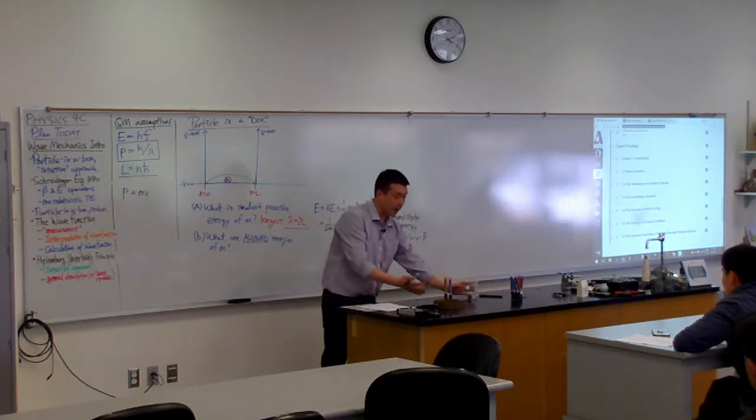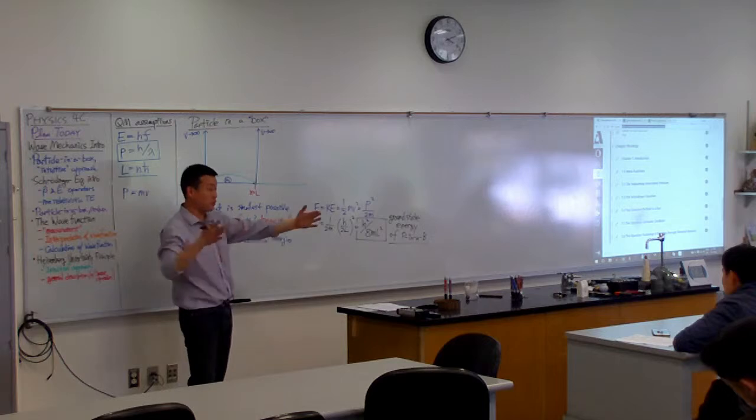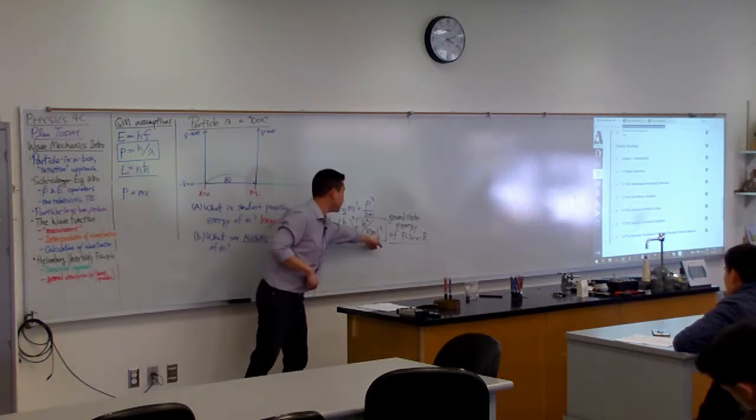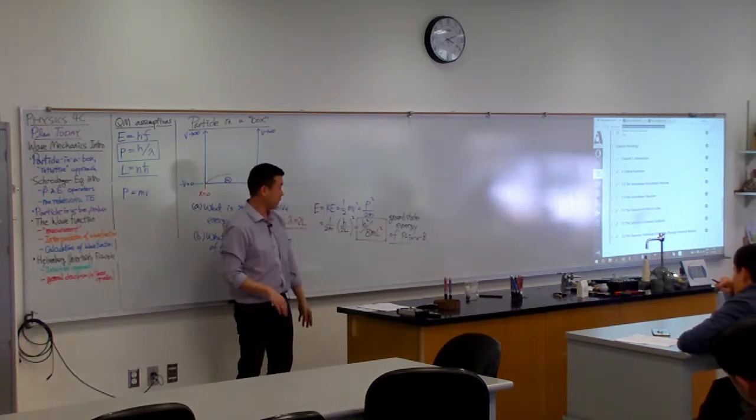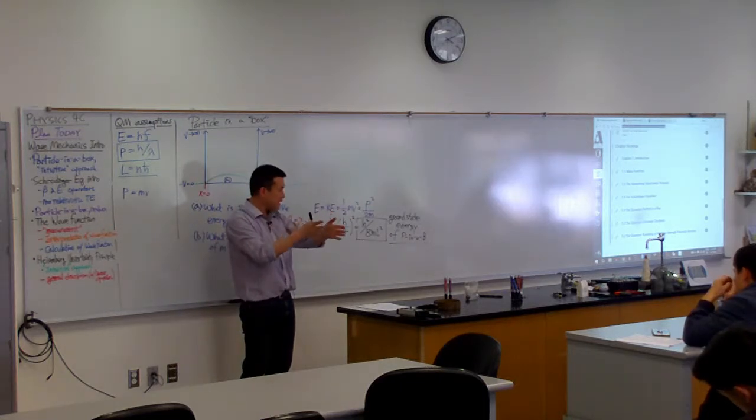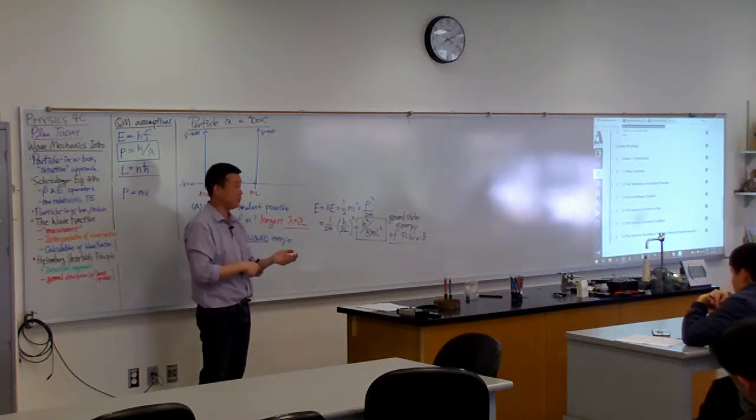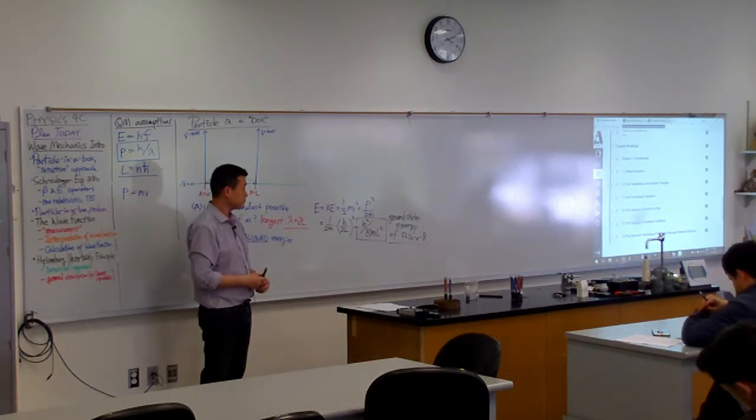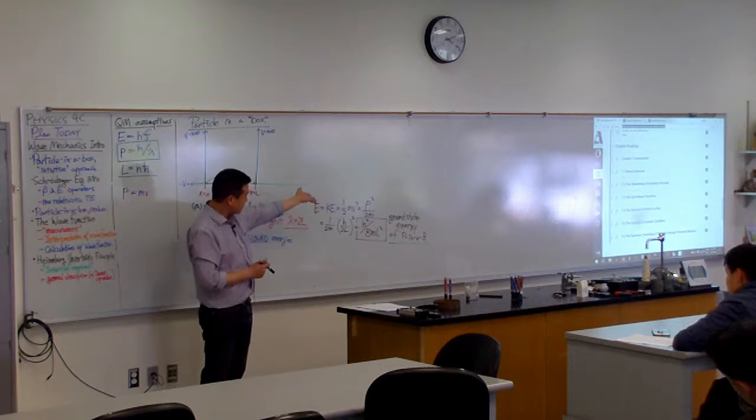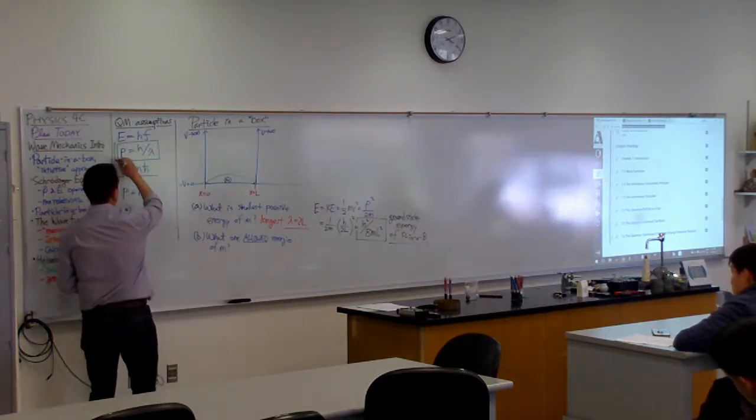Now, you can see that as the box gets larger, as the allow this longest wavelength becomes longer and longer, as L increases, this energy goes down as well. But if you want to make the box smaller, that necessarily involves the smallest possible energy becoming larger and larger and larger. So that's it. This derivation,